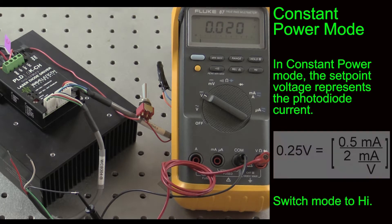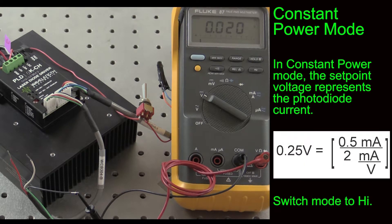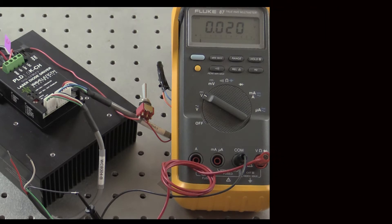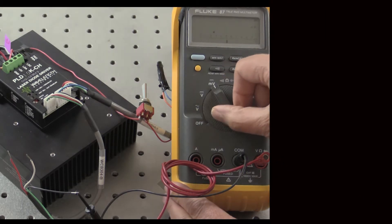For example, if we wanted to operate at a constant power where the photodiode produces 500 microamps or 0.5 milliamps, we would switch the mode to high, which has a transfer function of 2 milliamps per volt. Our setpoint would be 0.5 milliamps divided by 2, or 0.25 volts. The analog input transfer function also changes.